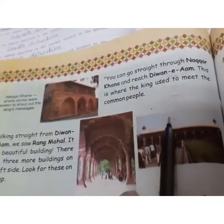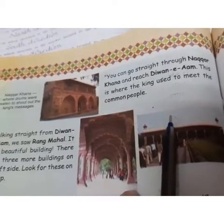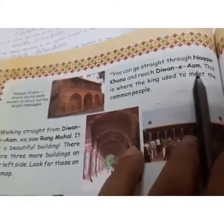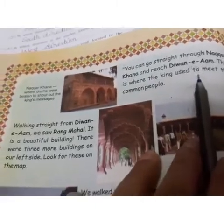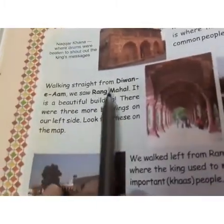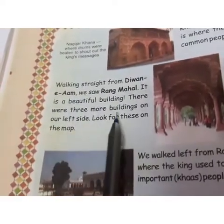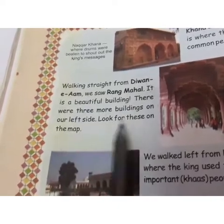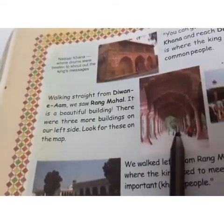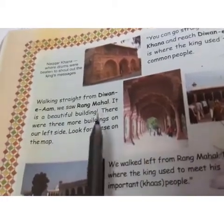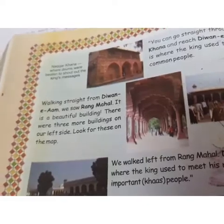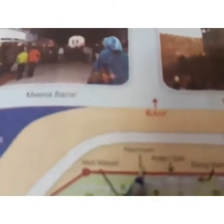The king used to meet the public at Diwan-e-Aam, which was straight from the Nagar Khana. Walking straight from Diwan-e-Aam was the Rang Mahal — it is a beautiful building. There were three more buildings on the left side of Rang Mahal. We will look at these on the map. Rang Mahal is a very beautiful building situated straight from Diwan-e-Aam. You can see here — this is the Rang Mahal.